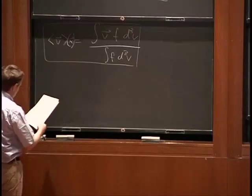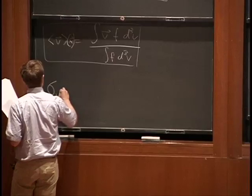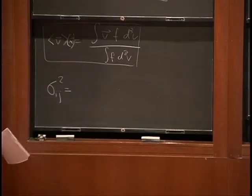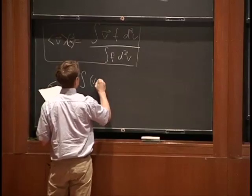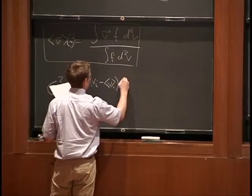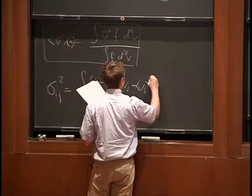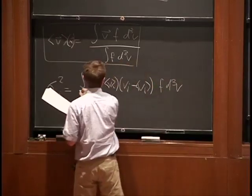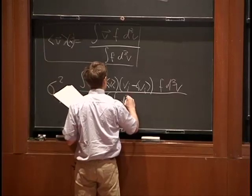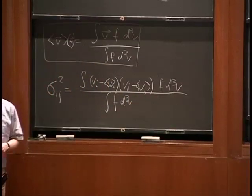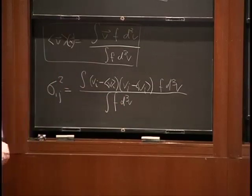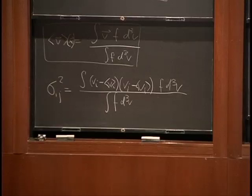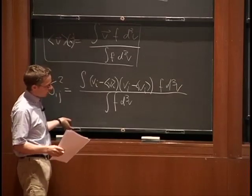You can also look at higher moments of the velocity field. Of quite some importance is the velocity dispersion tensor: σ²_ij = ∫(v_i - ū_i)(v_j - ū_j) f d³v / ∫f d³v. This tensor is symmetric, can be diagonalized to give principal axes, and dispersions need not be the same in all directions — you generally have anisotropic velocity distribution functions. This whole story of taking moments can be expanded further to give what are called the Jeans equations.